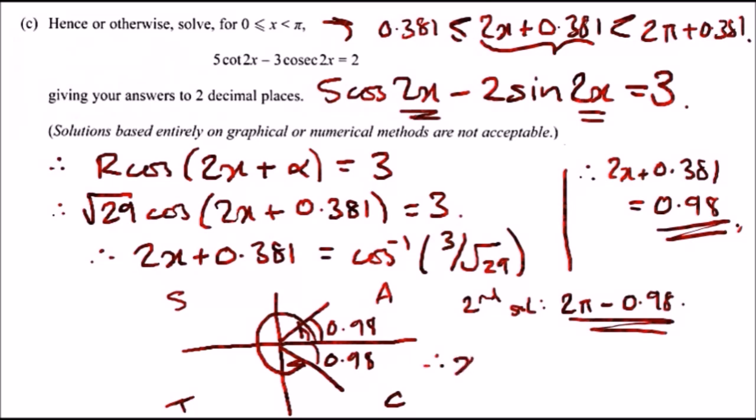Hence, the first value x should be 0.98 minus 0.381, all divided by two, which should give us, to two decimal places, 0.30 rounded up. For the second one, we got 2 pi minus 0.98, now we subtract 0.381 and divide it by two, and we should get 2.46.